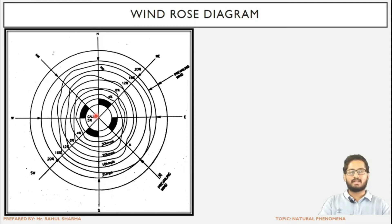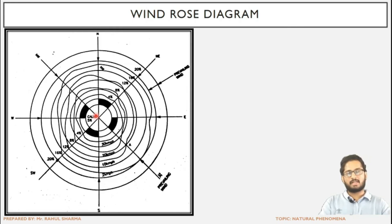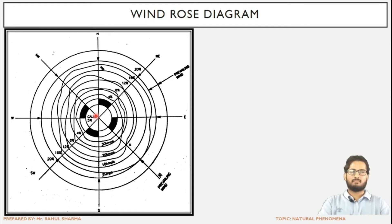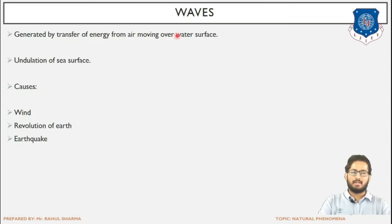At the center of the wind rose diagram is the calm period. The calm period basically indicates the duration when the intensity of the wind is very less, so it has no effect. We will be learning about the calm period in detail in airport engineering. For now, calm period is that period during which the intensity of wind is very less and it has no effect on any operation.